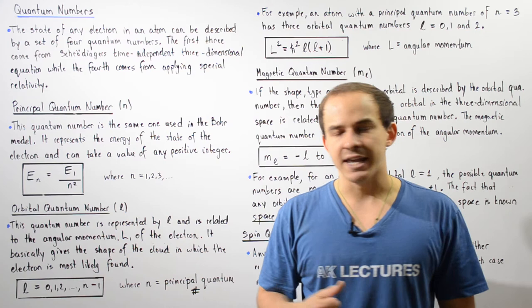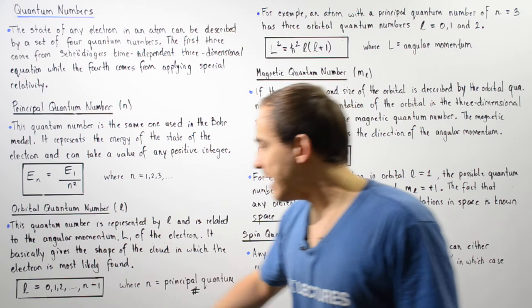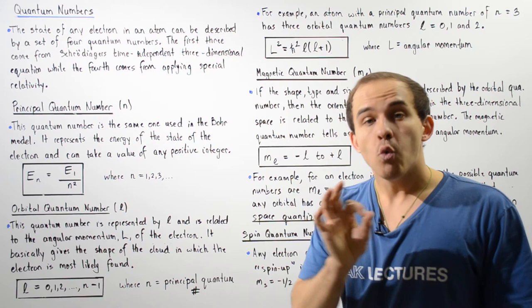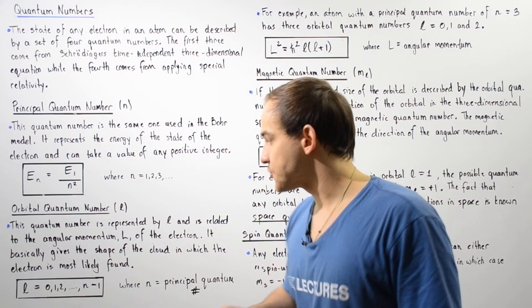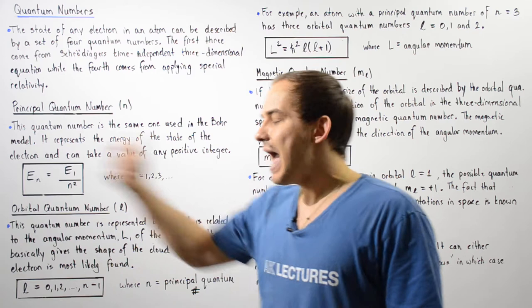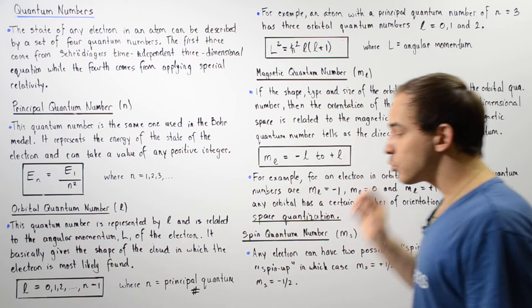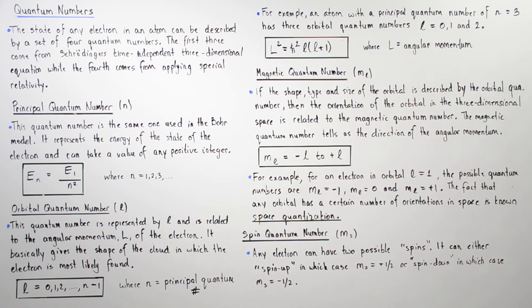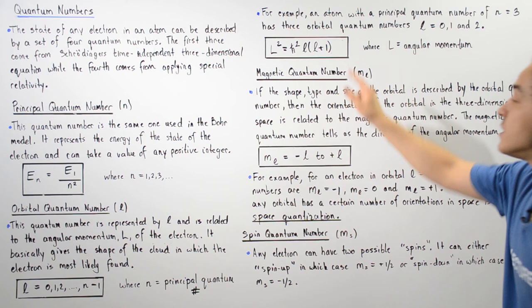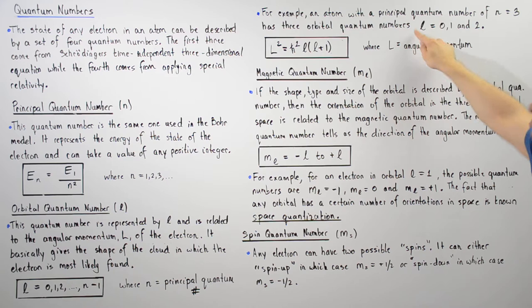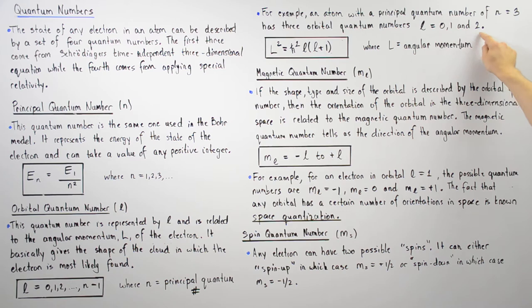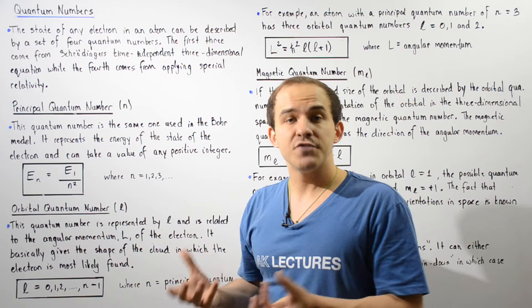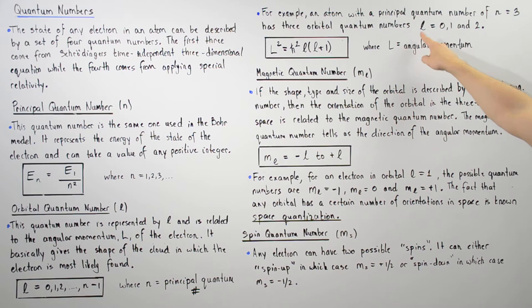The orbital quantum number l is given by the equation l = 0, 1, 2, 3, 4, all the way up to n minus 1, where n is the principal quantum number. For example, if an atom has three principal quantum numbers so n equals 3, then the atom has three different orbital quantum numbers: l can be 0, 1, or 2. Each one of these values represents its own shape, size, and type of the electron cloud we are dealing with.